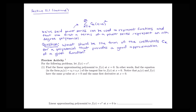Let's look at these ideas in the context of the following example. We have the function e to the x. The idea of doing a polynomial approximation is really generalizing the idea of a linear approximation. So let's start with the linear approximation for this function — finding the equation of the tangent line to e to the x at x equals 0.